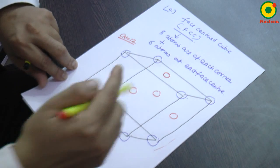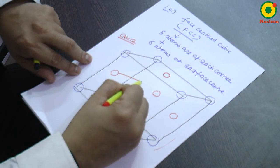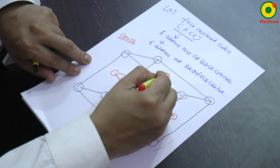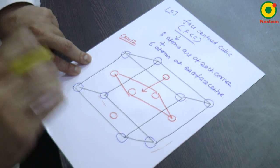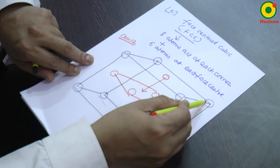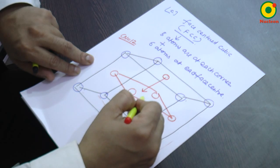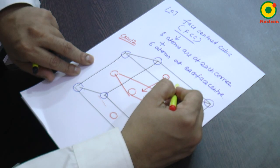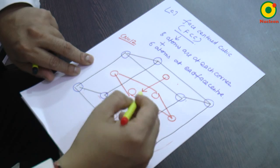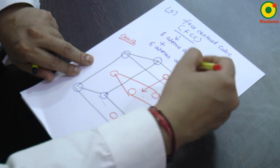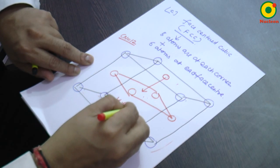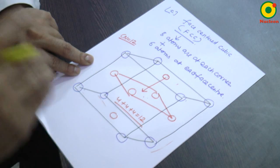We will understand how the coordination number is equal to 12. If I adjoin these four atoms, this atom will touch these four atoms in the down plane and four atoms in this plane. Since the whole structure is repeated, that means 4 plus 4 plus 4 in the upper plane — so total 4 plus 4 plus 4 equals 12, which is the coordination number for FCC.